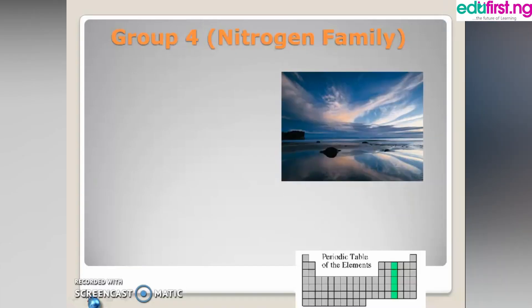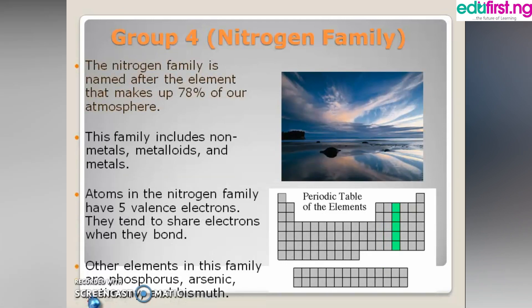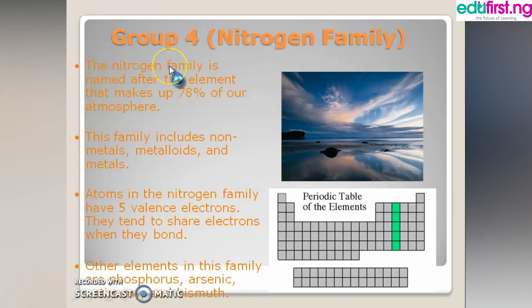Group 5 elements are the nitrogen family, named after nitrogen, since it is the most abundant element in the atmosphere — about 78% of the atmosphere comprises nitrogen. The family also includes non-metals, metalloids, and metals, and they have five valence electrons. They always share electrons when bonding. The main members of this family include phosphorus, arsenic, antimony, and bismuth.